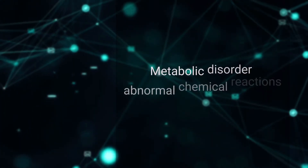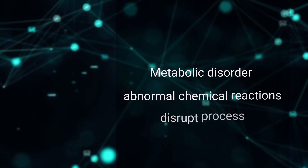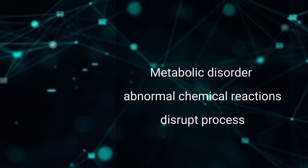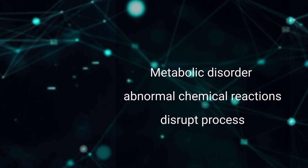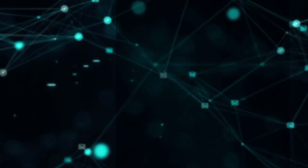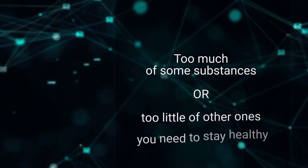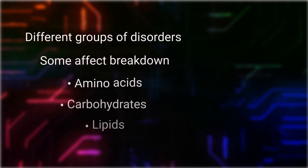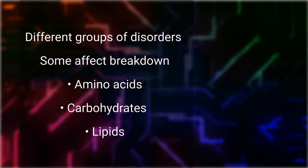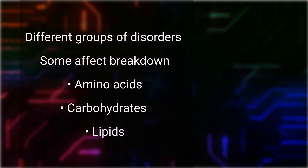A metabolic disorder occurs when abnormal chemical reactions in your body disrupt this process. When this happens, you might have too much of some substances, or too little of other ones, that you need to stay healthy. There are different groups of disorders. Some affect the breakdown of amino acids, carbohydrates, or lipids.